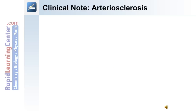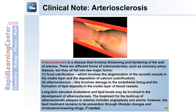Arteriosclerosis is a disease that involves thickening and hardening of the wall of arteries. There are different forms, such as coronary artery disease, but they fall into two major forms: 1) focal calcification and 2) atherosclerosis. Focal calcification involves the degeneration of smooth muscle in the media layer and deposition of calcium. Atherosclerosis involves damage to the endothelial lining and the formation of lipid deposits in the media layer. Long-term elevated cholesterol and lipid levels may contribute to atherosclerosis. Treatment includes angioplasty and stents; however, the best treatment remains prevention through lifestyle changes and cholesterol-lowering drugs if needed.